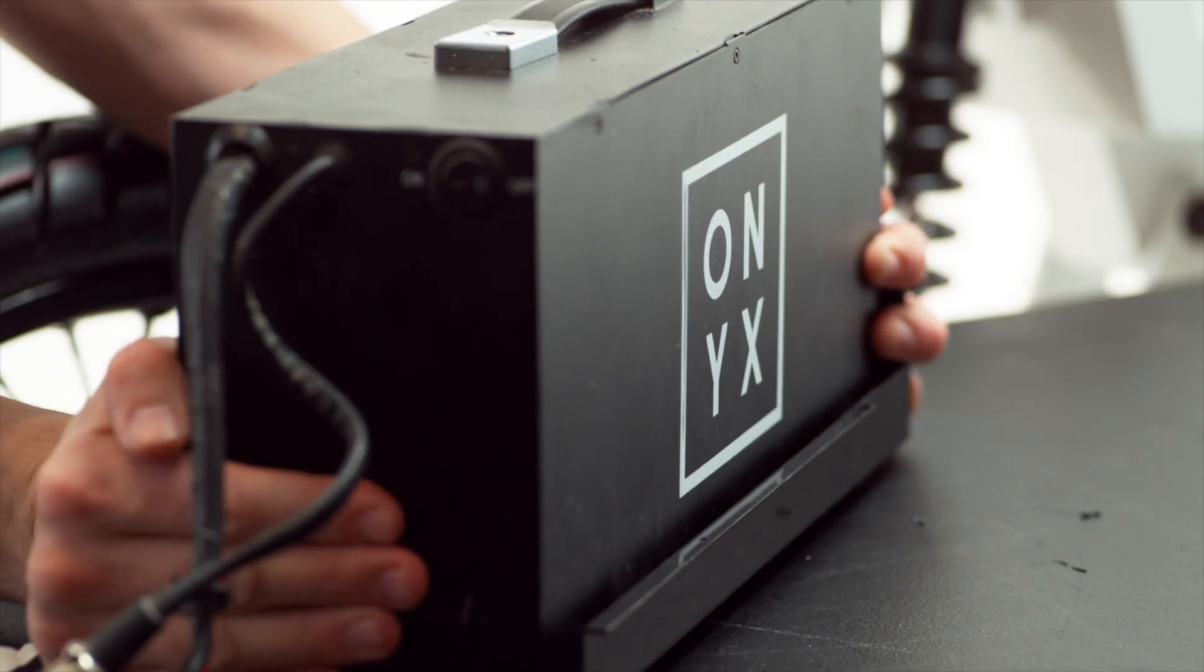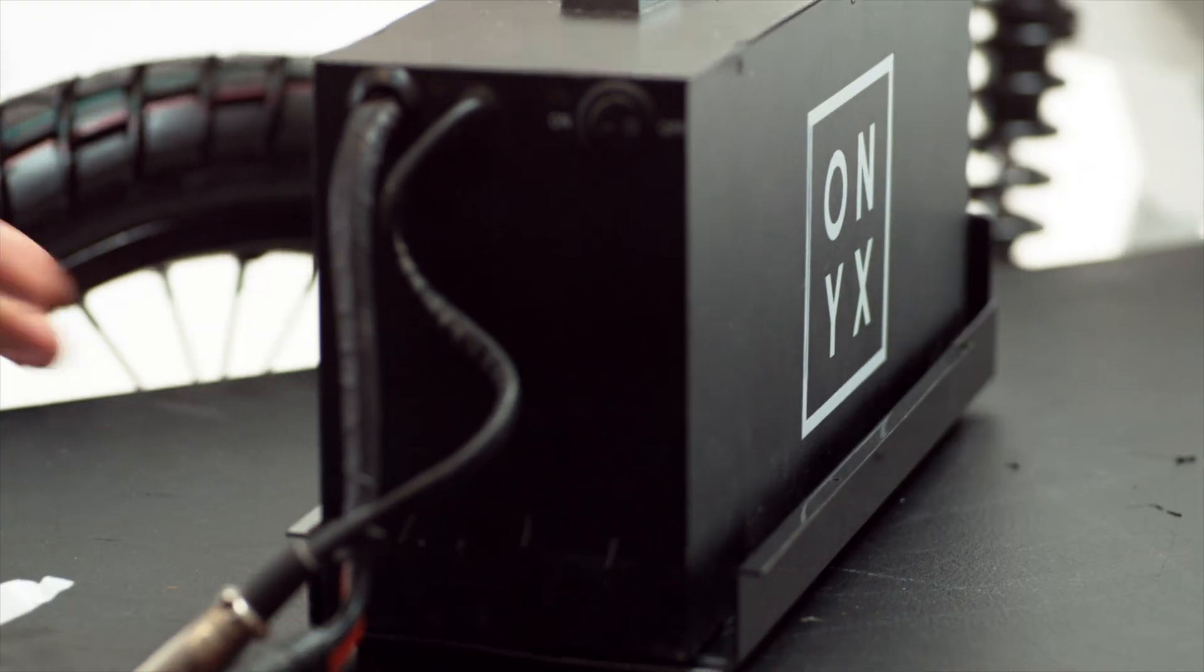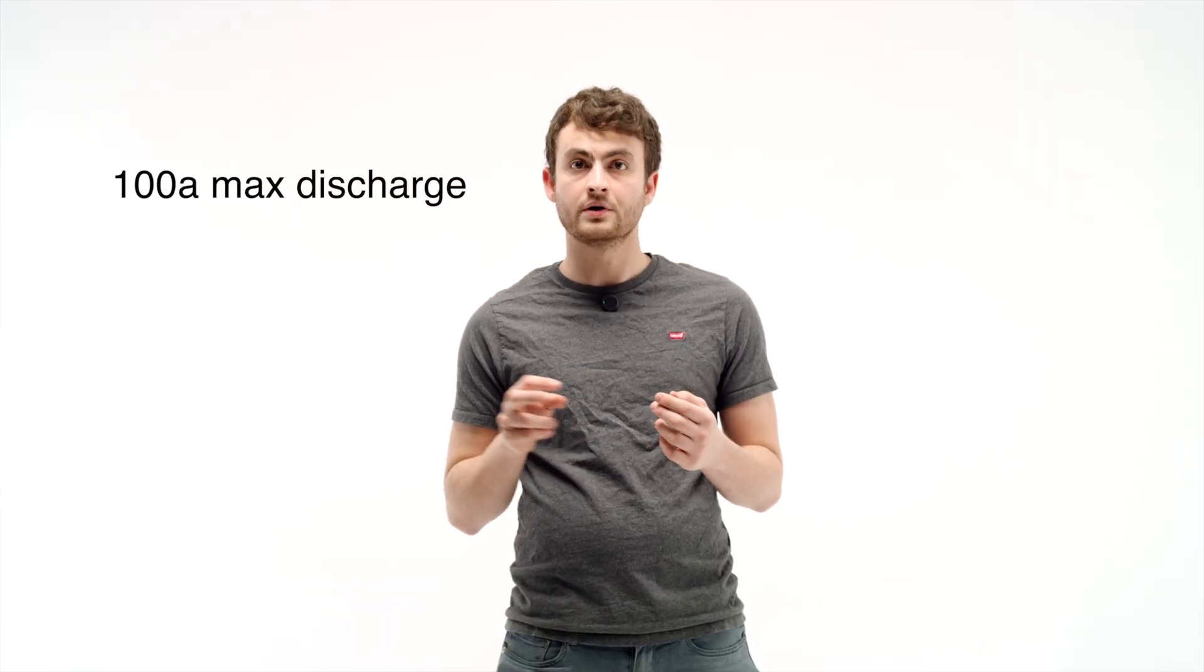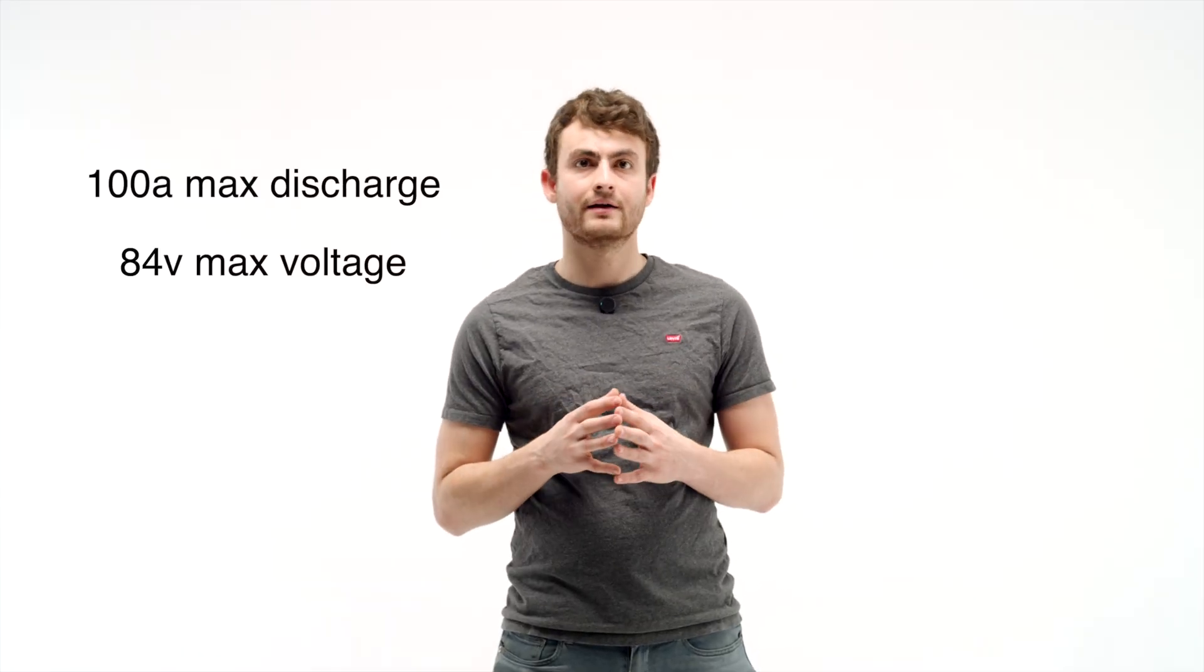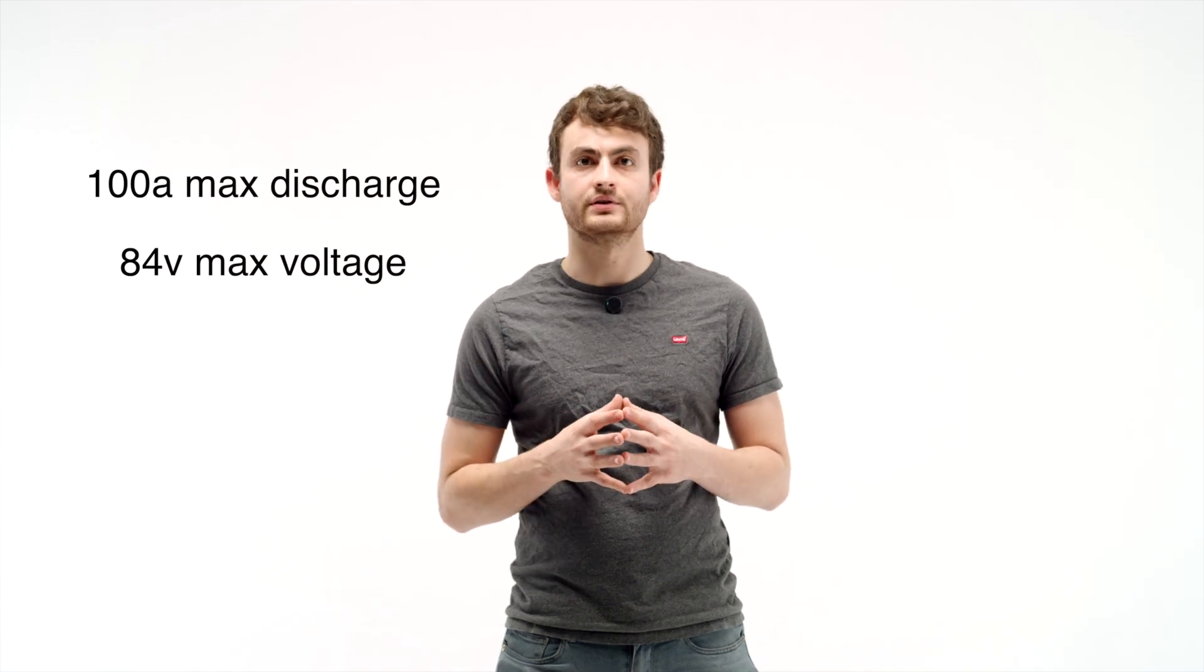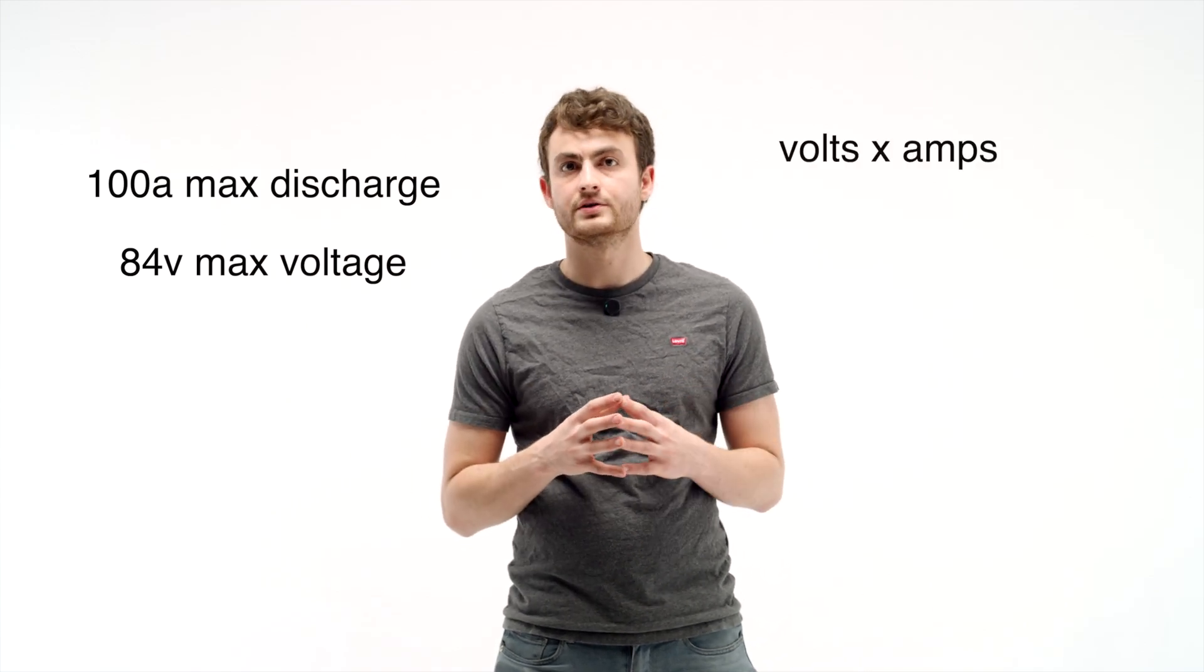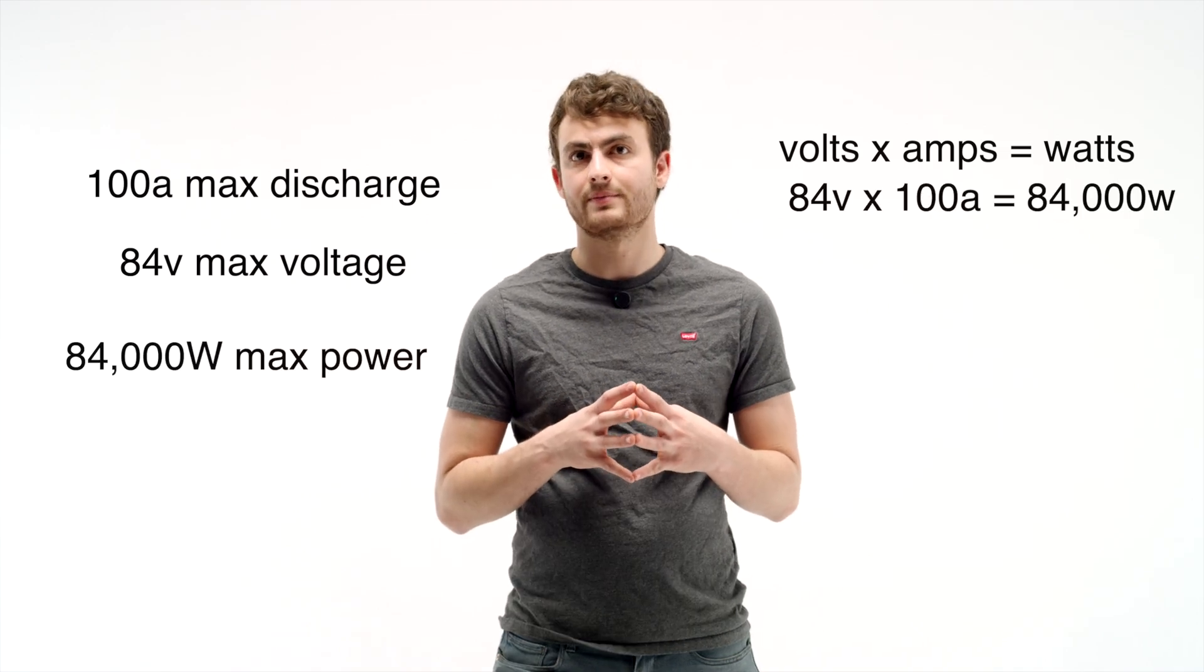It cuts off discharge or charge to the pack in the event that there's a problem with one of the cell groups, and also prevents us from over-discharging or pulling too much power from the battery pack if it doesn't have that much power to give. This onyx RCR battery has a 100 amp BMS. That means that we can pull 100 amps from this battery pack at its 84 volt voltage before the BMS will cut us off and say hey that's too much. That's 8.4 kilowatts of power.